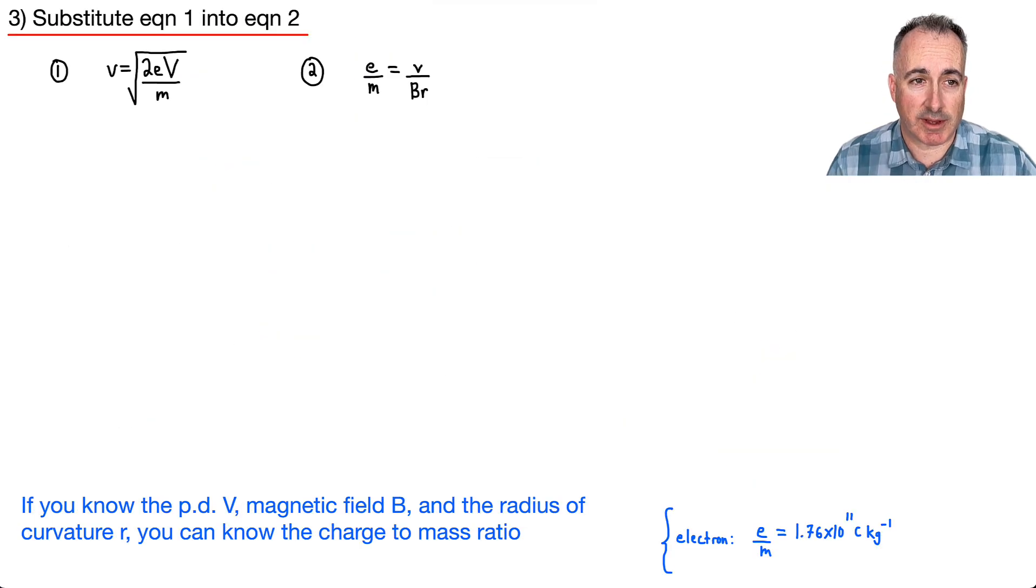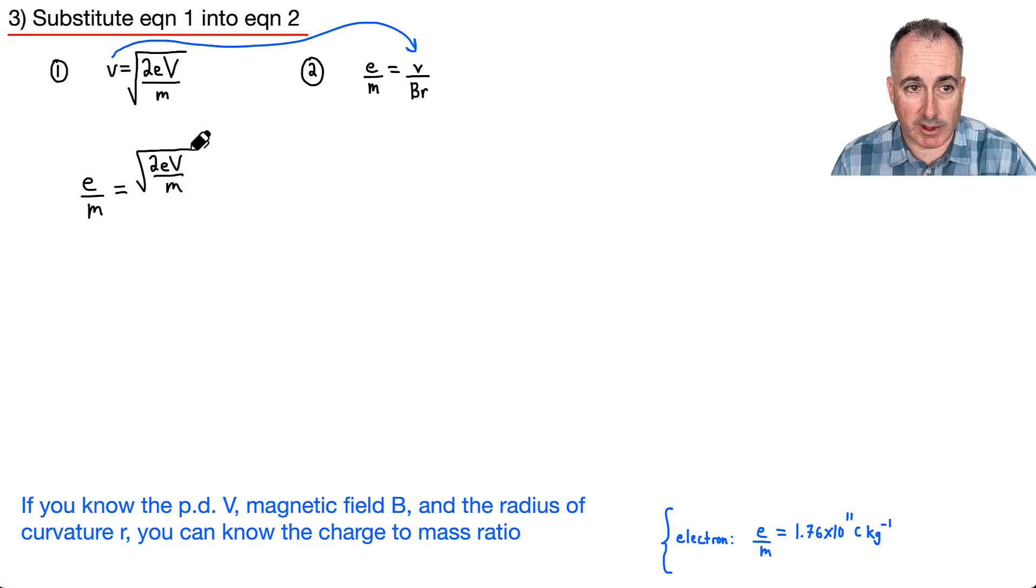Our last step: let's use our two equations. Equation 1, which was this, and equation 2, which was this. Let's use that to substitute for v. We have this little v, so let's take that one and shove it into here. So e over m equals, this v is going to be this whole mess, the square root of 2e capital V over m, all divided by BR.